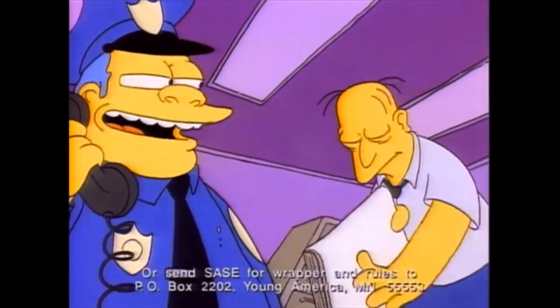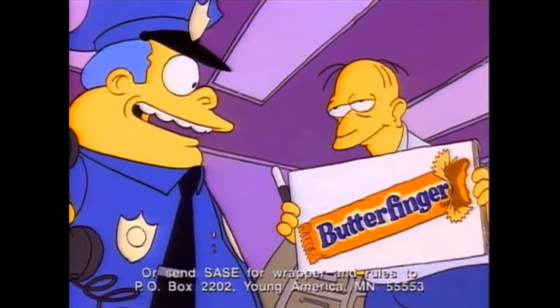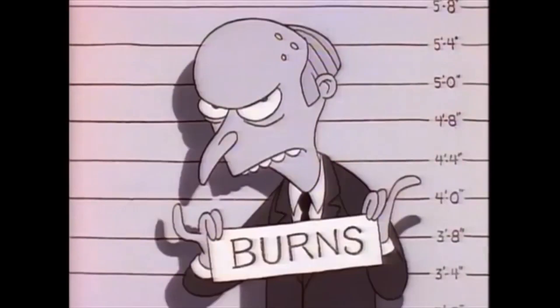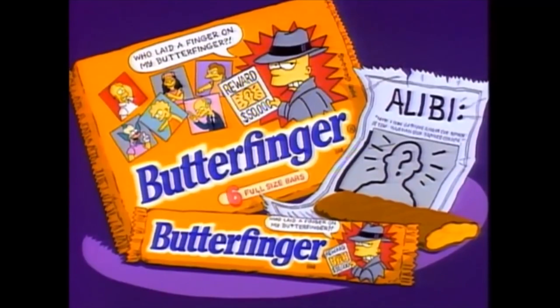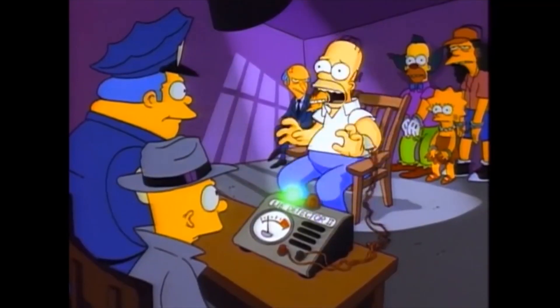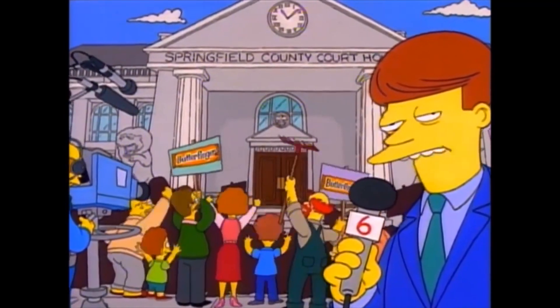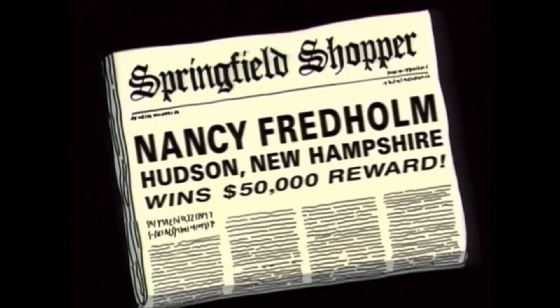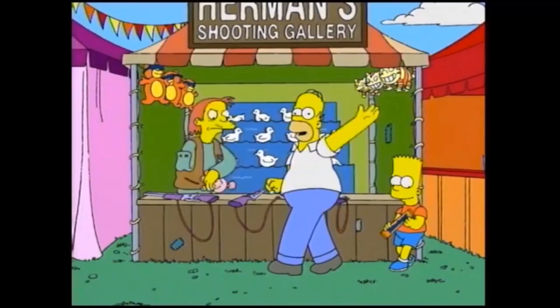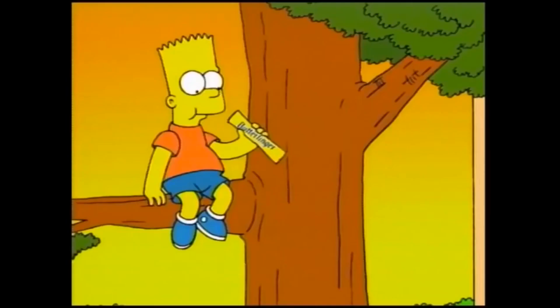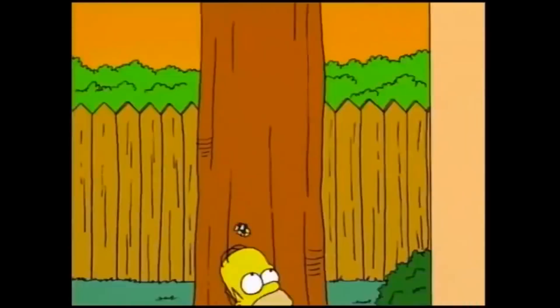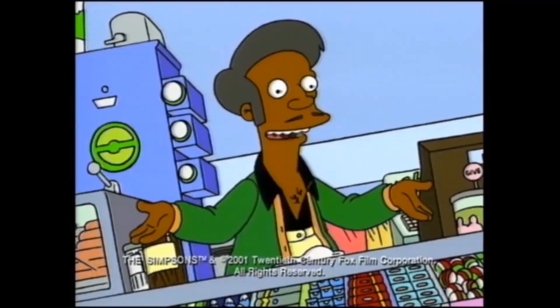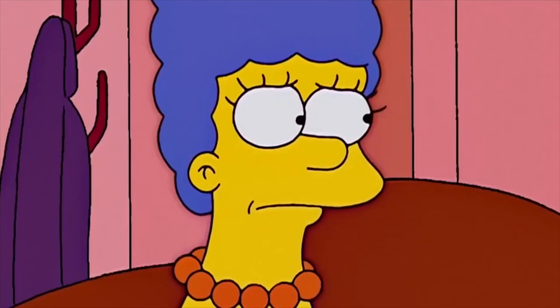Before Who Shot Mr. Burns, there was Who Laid a Finger on Bart's Butterfinger. This was a contest in 1993 where people would write in their predictions, with the winner getting $50,000. The options were Mr. Burns, Lisa, Otto, Krusty, Nelson and Homer. Spoiler — it was Krusty, disguised as Homer for the fake-out. This is definitely the peak of the ad campaign. It continued through 2013 when there was another contest, Who Stole Bart's Bar, with the later commercials simplified both in terms of humor and animation — which, you know, the same could be said for the series.